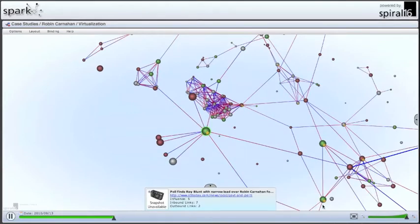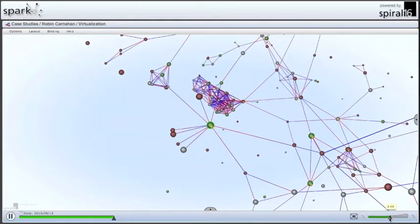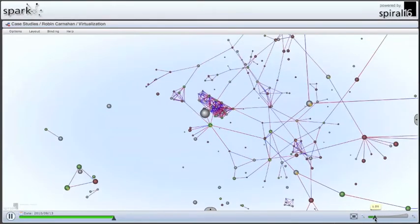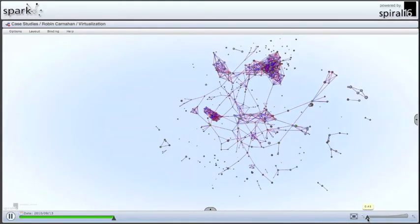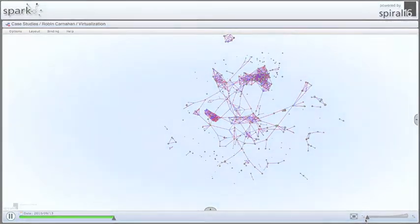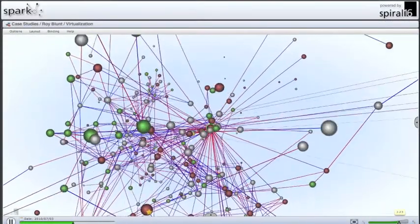But what we don't see here, and we didn't see in the Roy Blunt insight either, is RobinCarnahan.com or Robin Carnahan's Twitter site, which really tells us that Roy Blunt's campaign is doing a better job talking about Robin Carnahan than her own campaign.